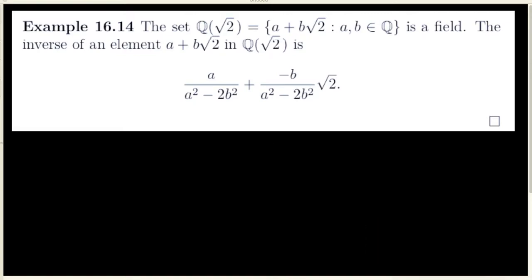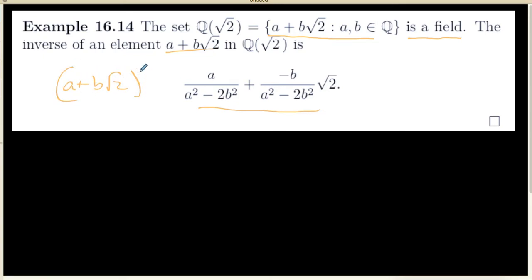In this video, we're going to be looking at a cryptic example from the textbook. Our author claims that this particular set is a field, but he doesn't say anything about why it's a field. The only stuff he actually says is some cryptic information that the inverse of this element is supposed to be this element — in other words, that a plus b times the square root of 2's multiplicative inverse should be that particular number. He is also implicitly saying, but not completely addressing, the fact about why this is actually inside his set.